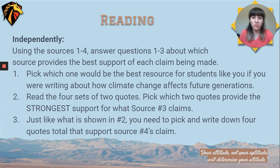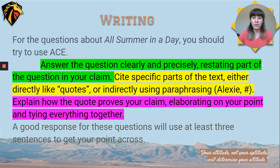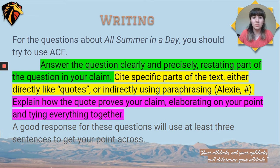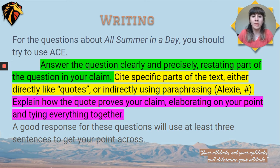Moving on to 'All Summer in a Day.' There are two questions you need to answer as an ACE paragraph. You need to answer the question clearly and precisely, restating part of the question in your answer. Cite specific parts of the text, either directly through quotes or indirectly using paraphrasing — always include the author's last name and page number, but for this one you can just put Bradbury with no page number. Then explain how the quote proves your claim, elaborating on your point and tying everything together. A good response will use at least three sentences.